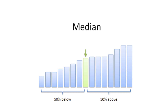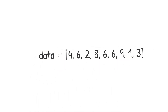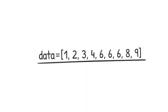First, order the values in the dataset from smallest to largest, and the second step is to identify the numbers that fall in the middle. Let's arrange the data points from smallest to largest. The center of the dataset and hence the median is 6.